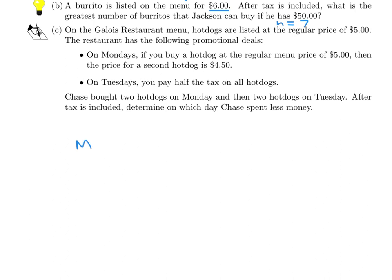On Monday, he spends $5 on the first one, then $4.50 on the second one. Then, of course, we apply the tax. So add these two prices and multiply by 1.1, and you get $10.45. That's how much he spent on Monday.